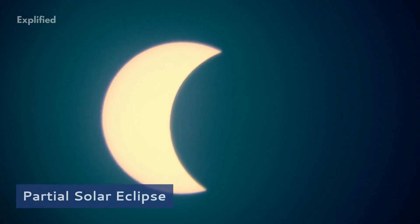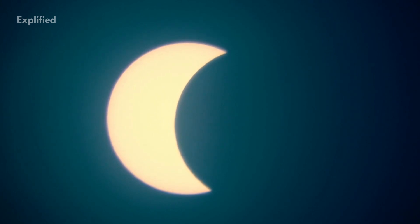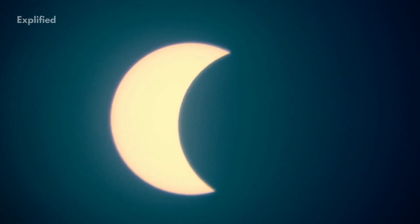The second type is a partial solar eclipse, where only a part of the Sun gets overshadowed. When the penumbra passes over the Sun, only a part of it gets hidden and the Sun will appear slightly hidden.